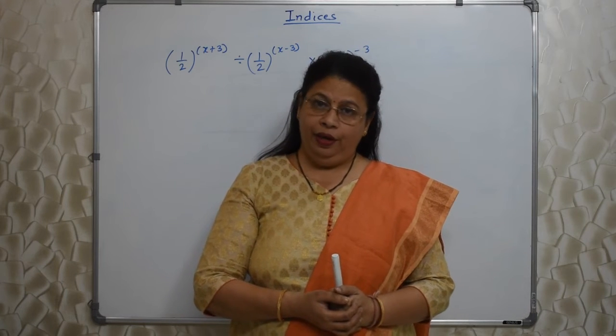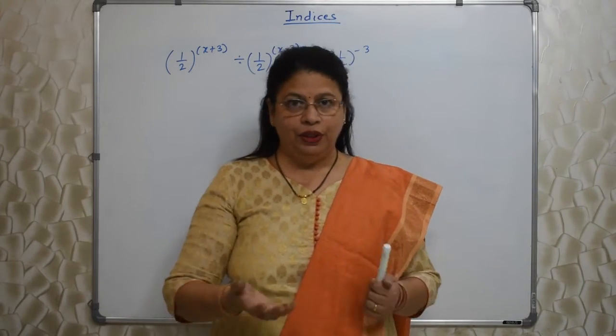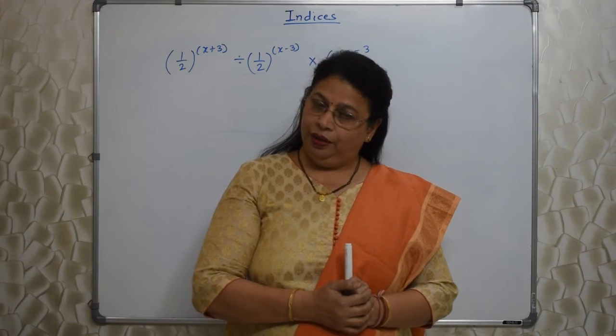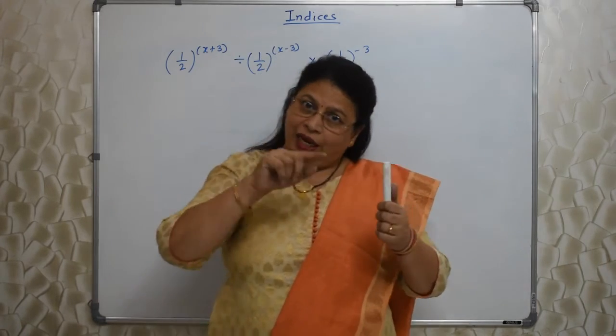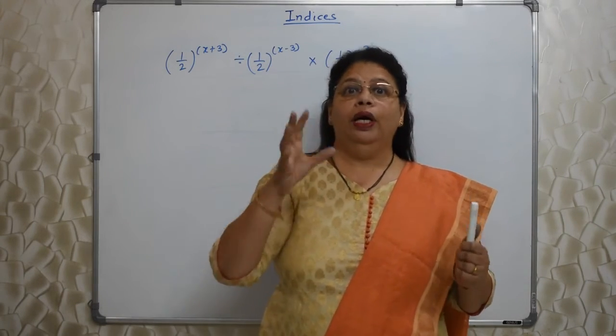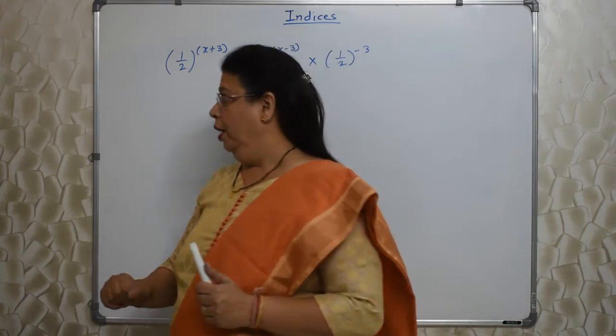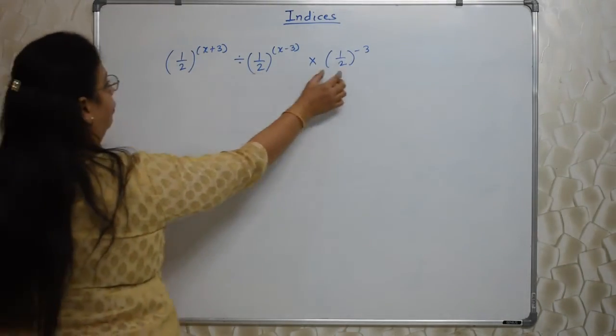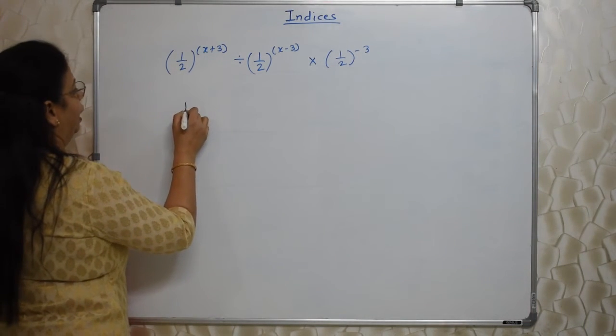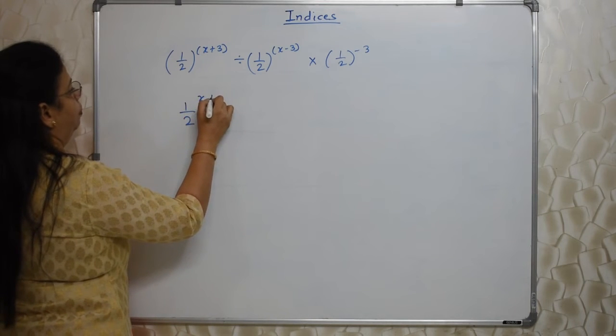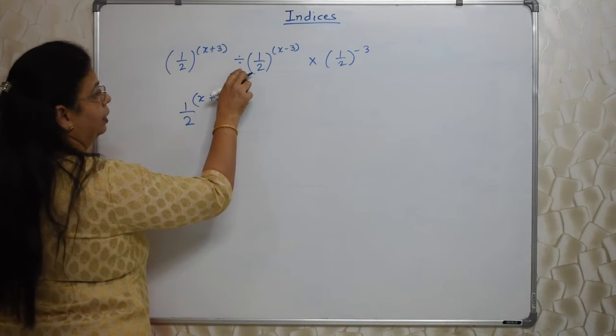As you all are aware, there will be 20% sums in IT or maths or even in languages where 2 correct options will be there. If you mark only 1, then 2 marks gone even though that is correct. They will indicate in the question to choose any 2 correct options. So this sum is like that. Here you will get 2 correct options. Observe this. Base is same, so no problem. As per the rule of indices let's go ahead. I am writing common (1/2)^(x+3). No, first one more step I will make because there is division here.